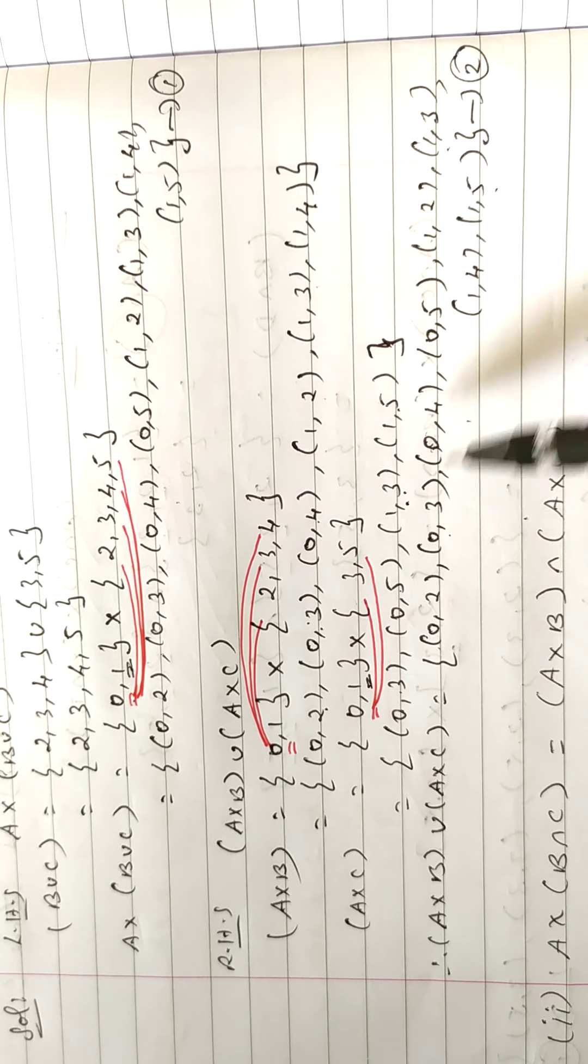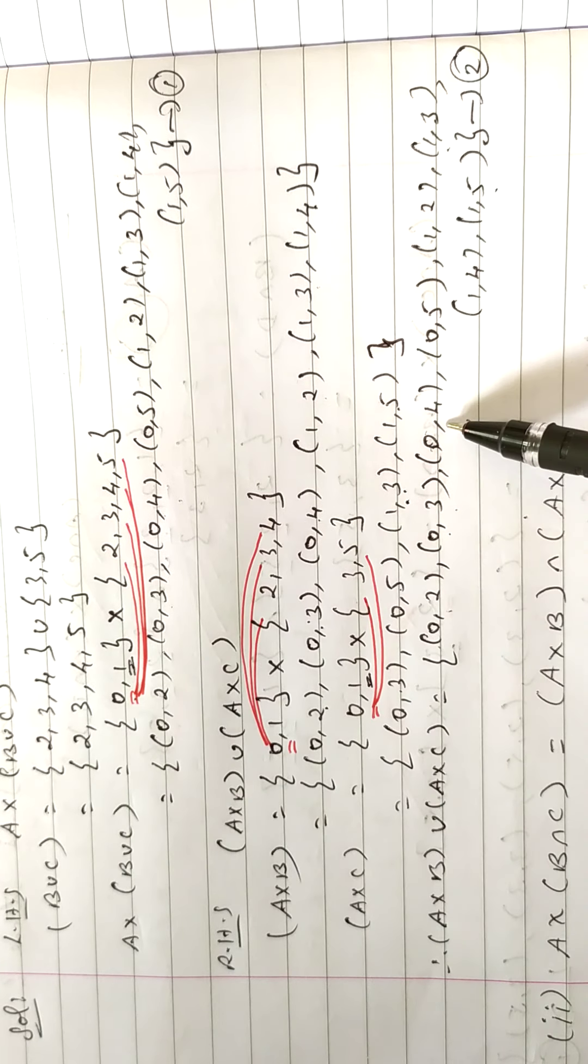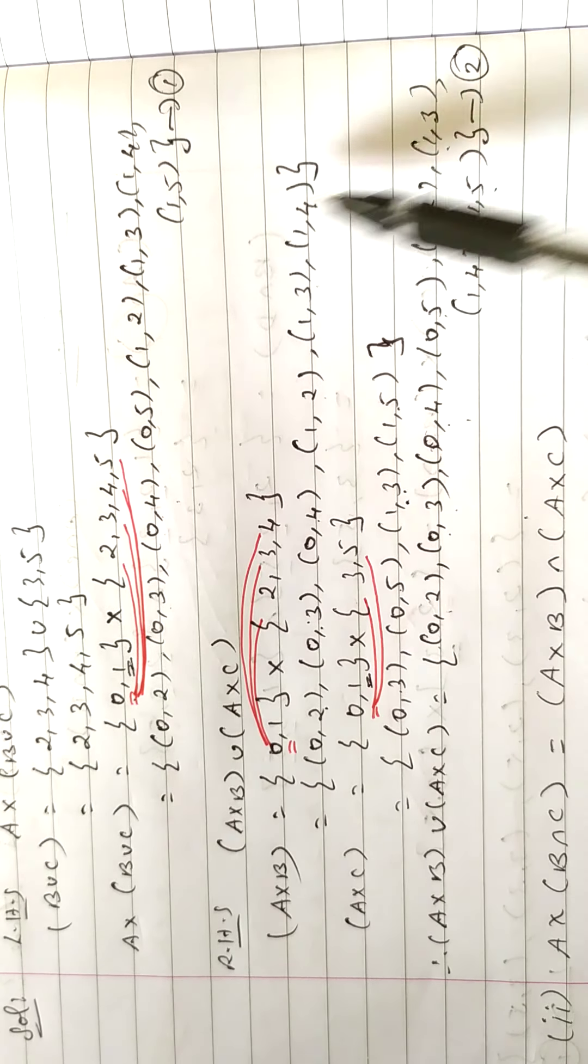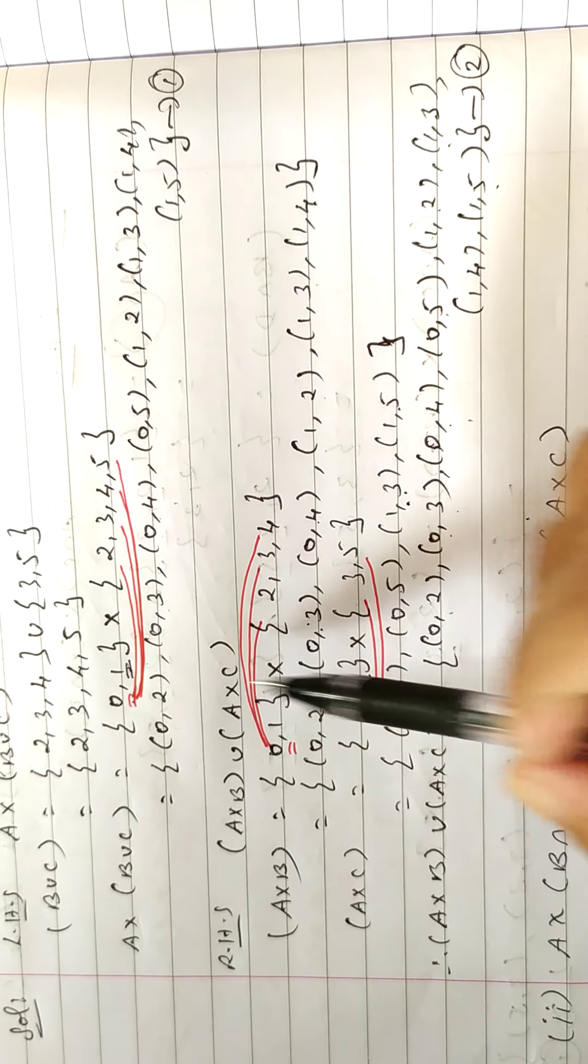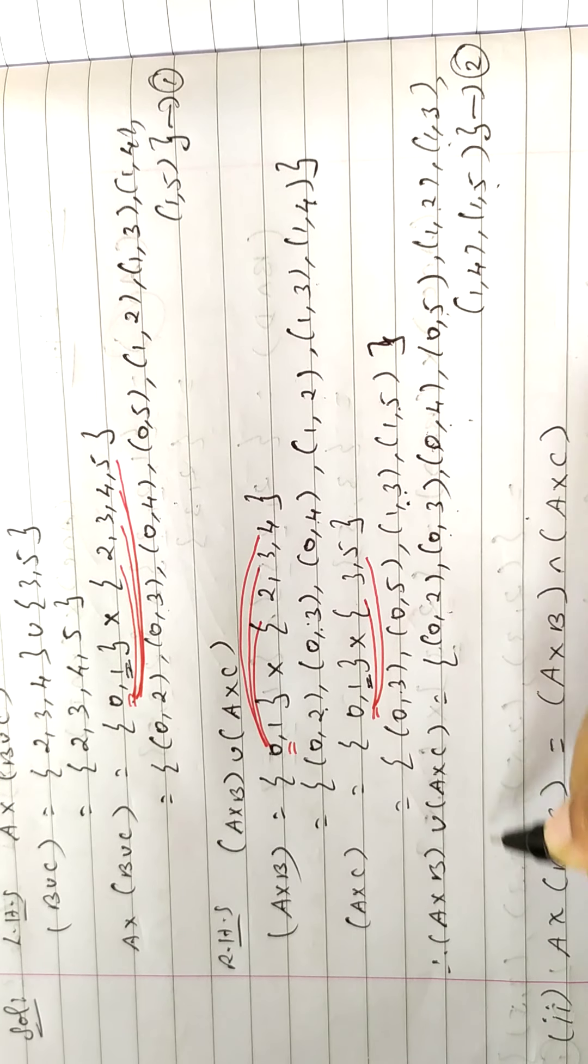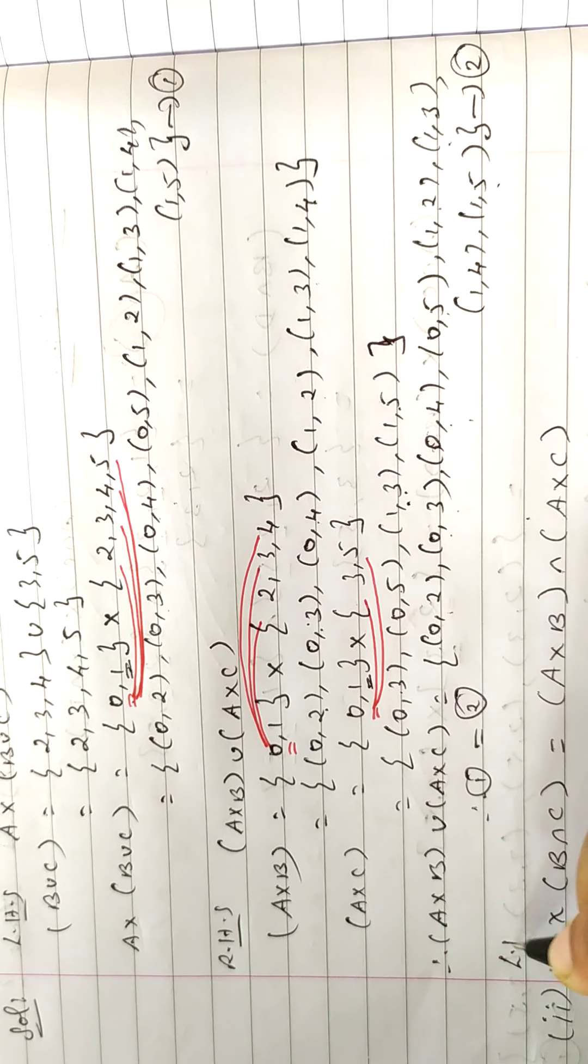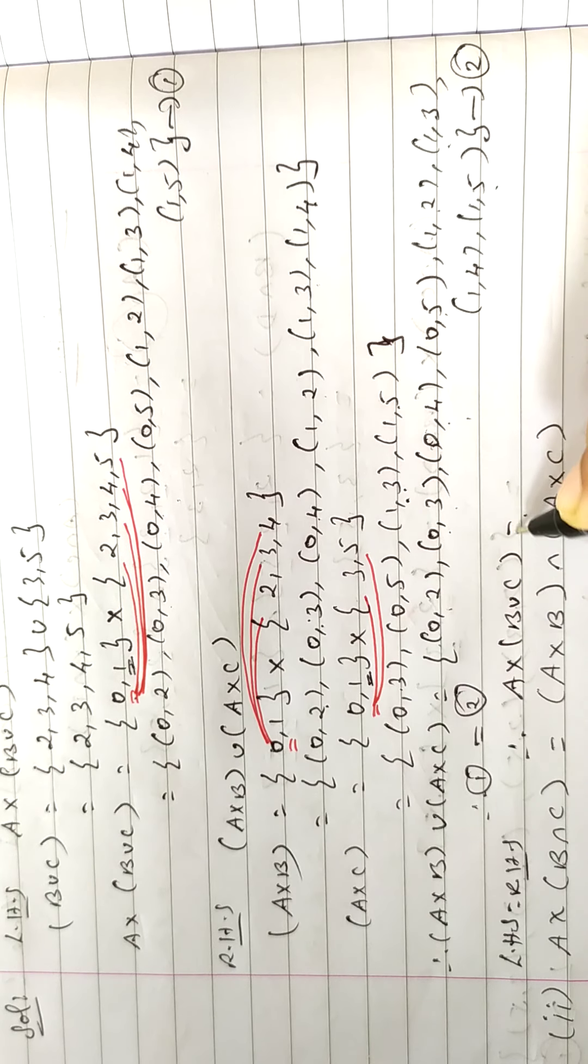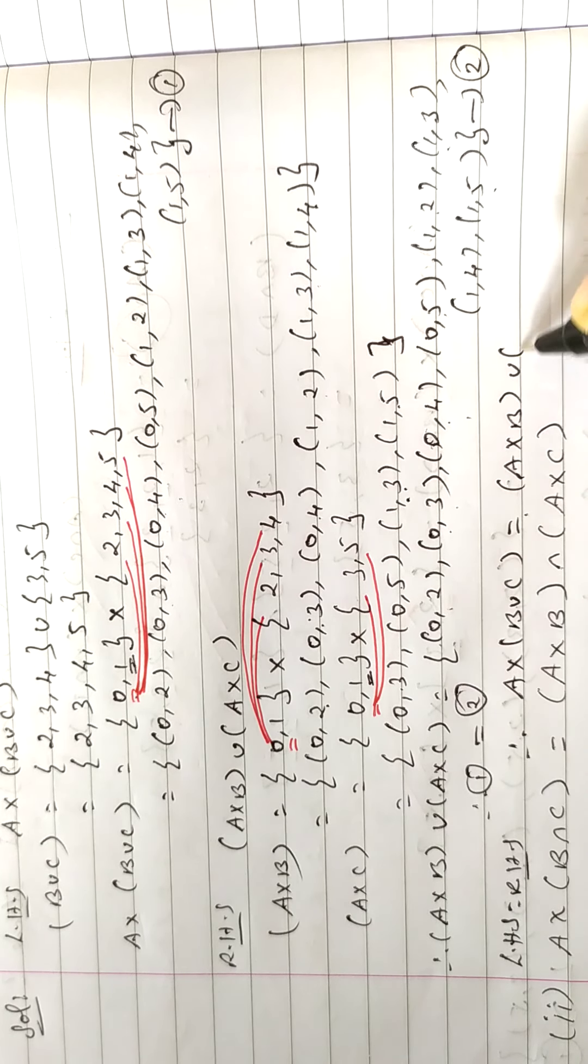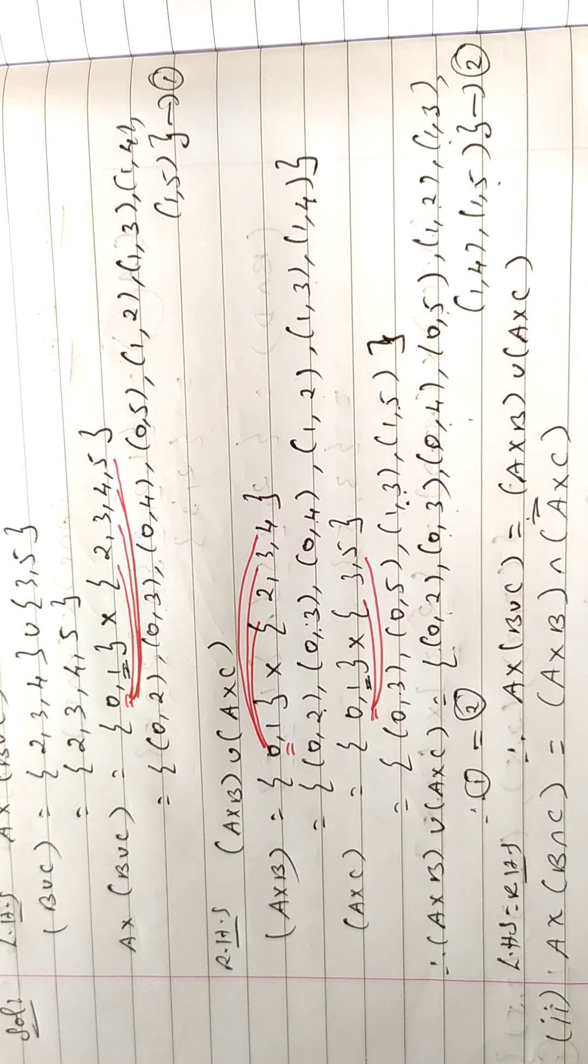Now you compare 1 and 2. Both are equal. Therefore 1 is equal to 2, left hand side is equal to right hand side. Therefore, A cross B union C equal to A cross B union A cross C. So we get the answer. We go for the second subdivision.